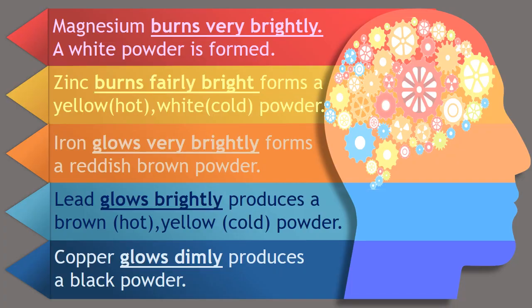If we repeat the experiment with other metals, we can see the differences in the intensity of flame or glow. Magnesium burns very rapidly in oxygen and produces a very bright white flame and a white powder. This shows that magnesium is very reactive. In contrast, copper only glows weakly when it reacts with oxygen and produces a black powder. This shows us that copper is a very unreactive metal.